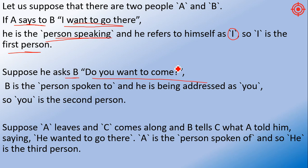Suppose he asks B, 'Do you want to come?' B is the person spoken to and he is being addressed as 'you', so 'you' is the second person.